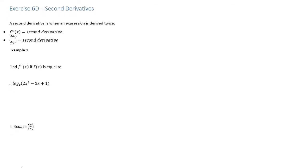In this video we're going to investigate something called second derivatives. Later on in specialists we'll have a look at how you can take the derivative of the derivative to understand the behavior of graphs and analyze what the gradient is actually doing. A second derivative is when an expression has been derived twice. The way you would show this is f double dash x, or d squared y over dx squared. Both of these are second derivatives.